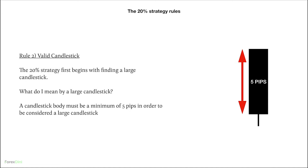Rule number two: valid candlestick. The 20% strategy first begins with finding a large candlestick. A candlestick body must be a minimum of five pips in order to be considered a large candlestick. The body must be five pips — if it's 4.9 or 4.8, it is not a valid candlestick.